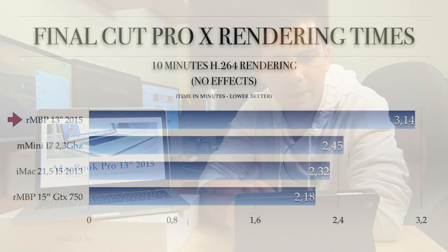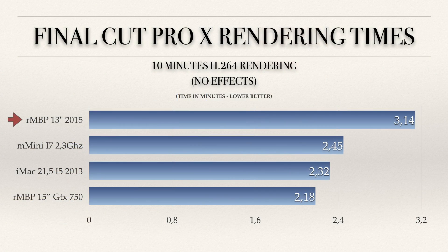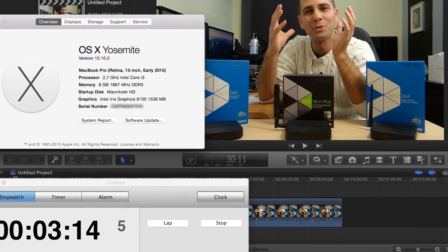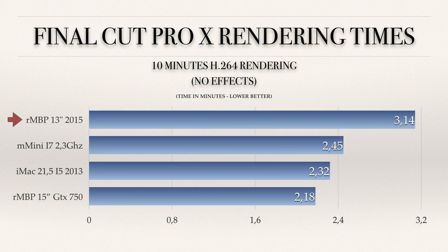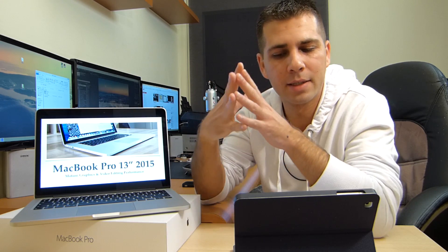Let's move on to Final Cut Pro 10 rendering times. The same 10-minute QuickTime H.264 file with no effects on the Retina MacBook Pro early 2015 13-inch takes 3 minutes and 14 seconds to render. Comparing with the Retina MacBook Pro with the GTX 750, it takes 2 minutes and 18 seconds — not a huge difference. If you have simple videos, family videos, or YouTube content to edit, this machine can definitely handle that.